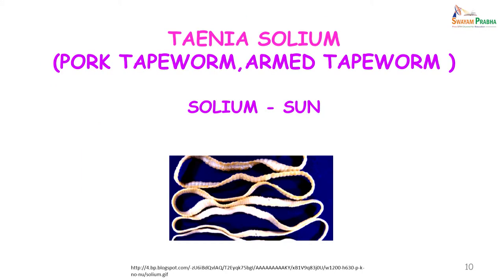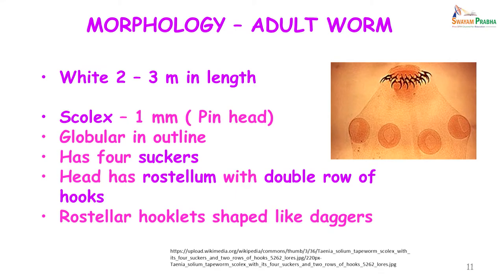Taenia solium, or the pork tapeworm, is referred to as the armed tapeworm on account of the rostellum that it possesses. It is 2 to 3 meters in length, has a pin-head scolex which is only 1 millimeter in diameter, globular. The head has 4 suckers and a rostellum with a double row of hooks. The hooks are shaped like daggers, and it is with the help of these hooks that Taenia solium attaches to the intestine of the host.